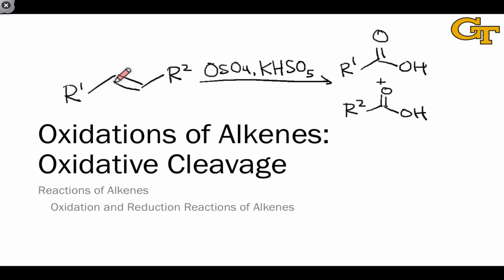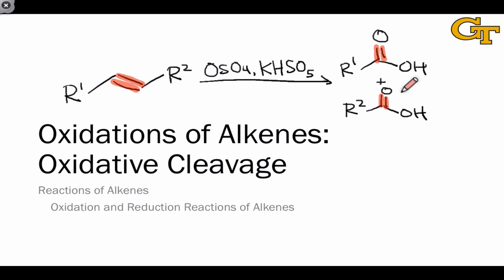In an oxidative cleavage reaction of an alkene, both bonds of the carbon-carbon double bond are broken, and carbonyl groups are established at those carbons. The example shown here shows the establishment of two carboxylic acids from an alkene in which there are hydrogens at both carbons of the alkene.